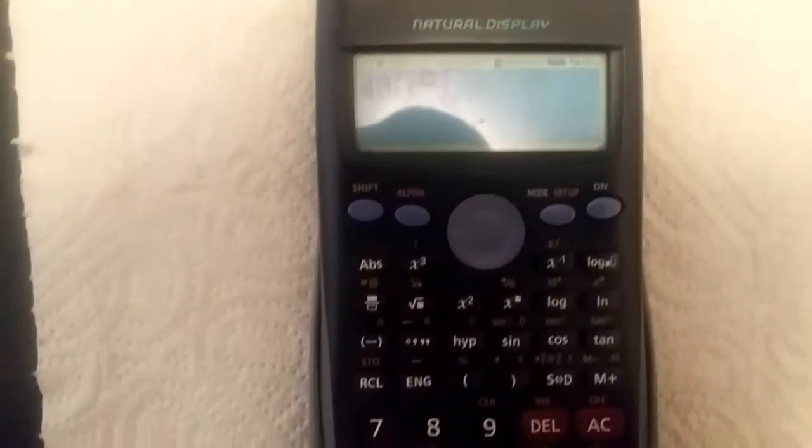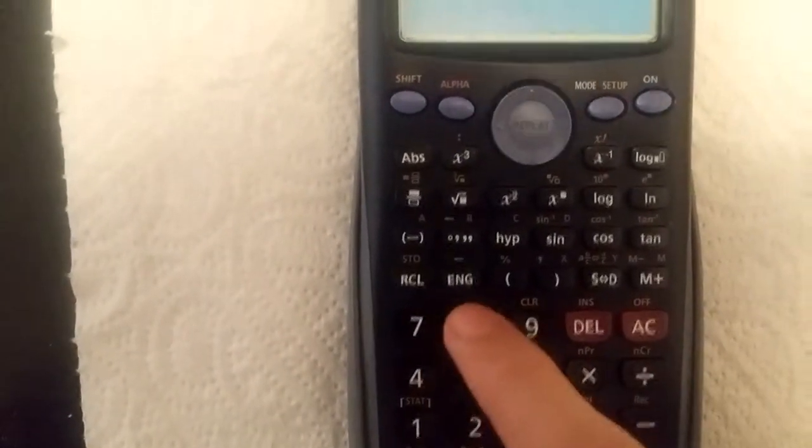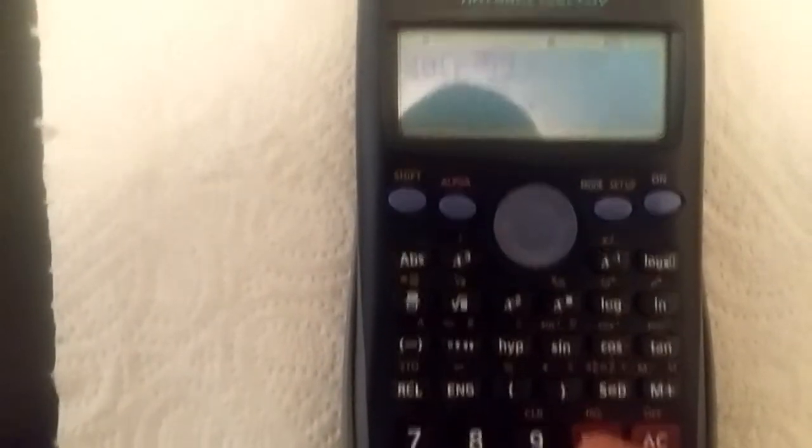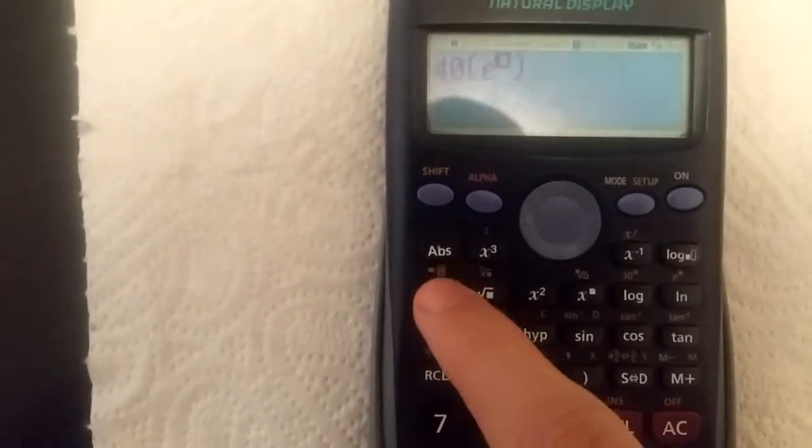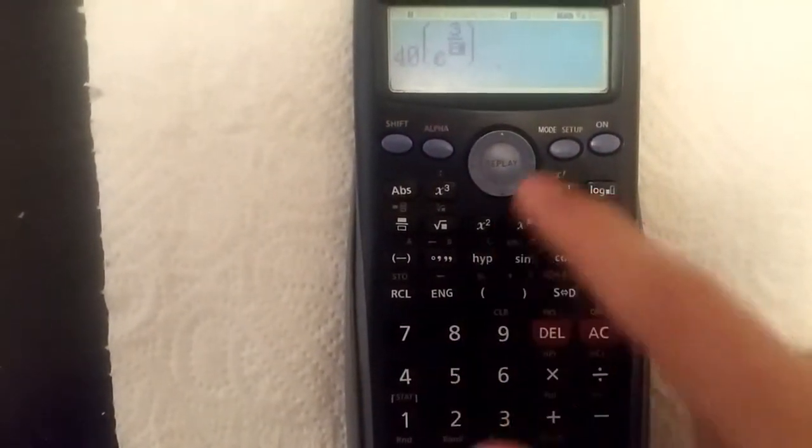Now, you put the power. The power is 3 over 8, so it would be 3 divided by 8. It looks a bit like that, or you could write it as a fraction. Put the fraction 3 over 8.